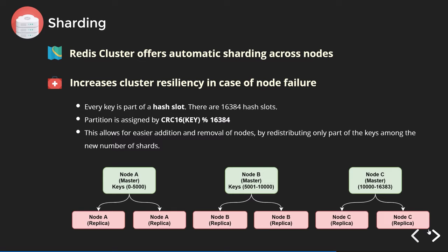Redis cluster offers automatic sharding across nodes to improve cluster resiliency in case of node failures. The key is finding the perfect number of shards — too many and you have to touch too many nodes to aggregate data; too few and you create a hotspot. Redis assigns shards using CRC16 of the key modulo 16384. This is just a high-level overview; if you're very interested, read the official documentation.